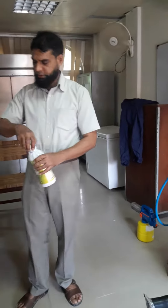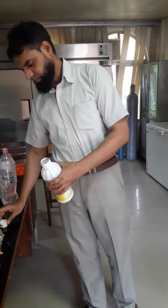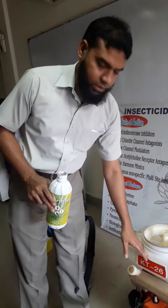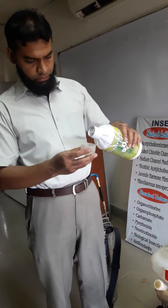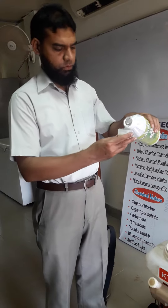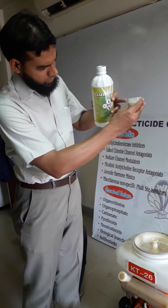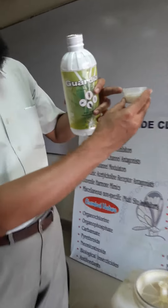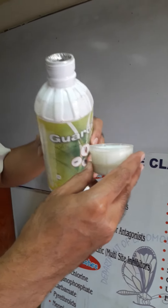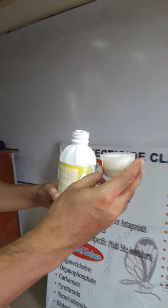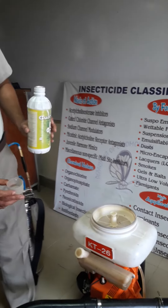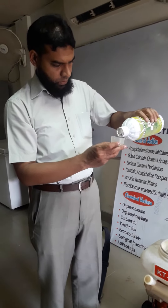Now we need insecticide. For 8 liters of water, we need 100 ml of insecticide. This is the gauge on which the quantity is marked. This is 50 ml of insecticide, so for 8 liters we need 2 of these measures.